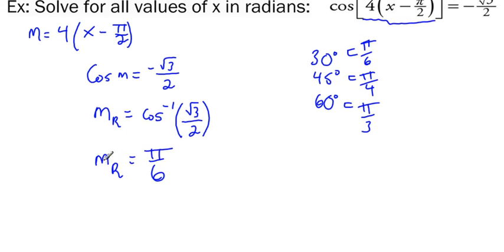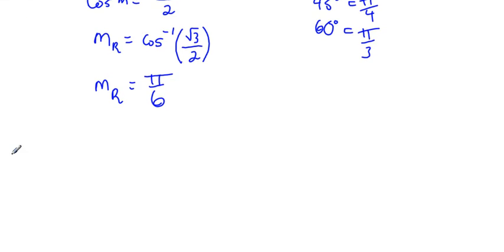That's my reference angle. Now I need to find my actual values of m. First thing I should notice here is that cos is negative. So cos is negative, I'm going to write that out.